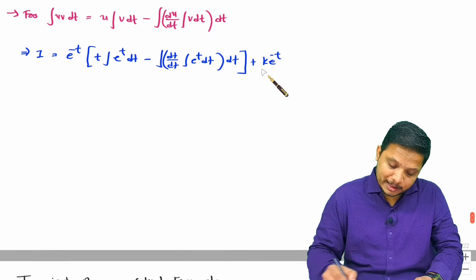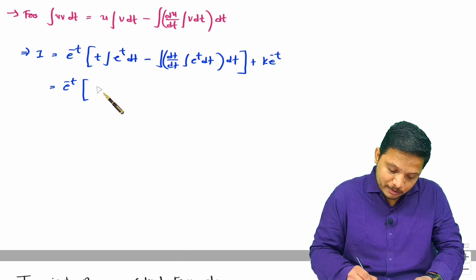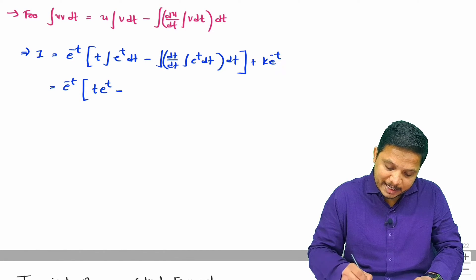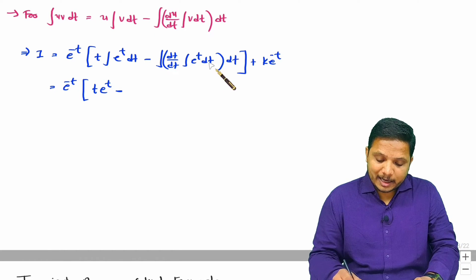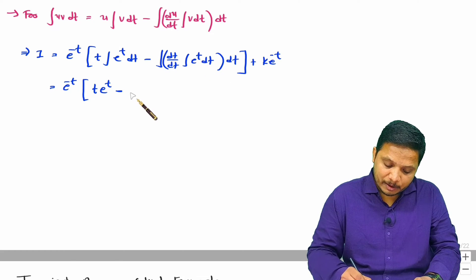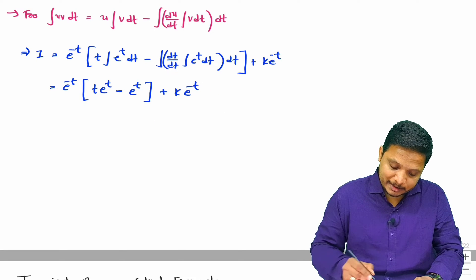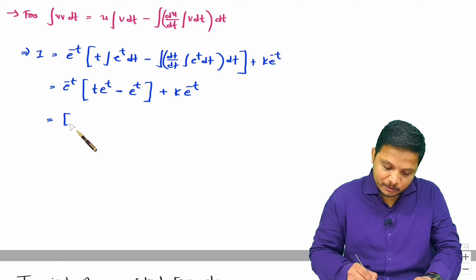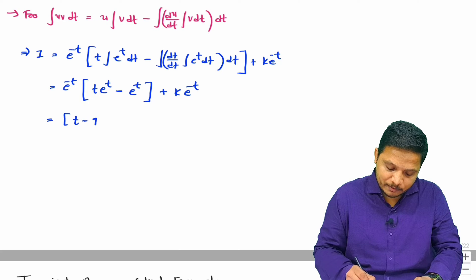Solving further, we have e^(−t) multiplied inside: e^(−t)·e^t = 1, so the bracket becomes t − 1. Therefore i = t − 1 + k·e^(−t).